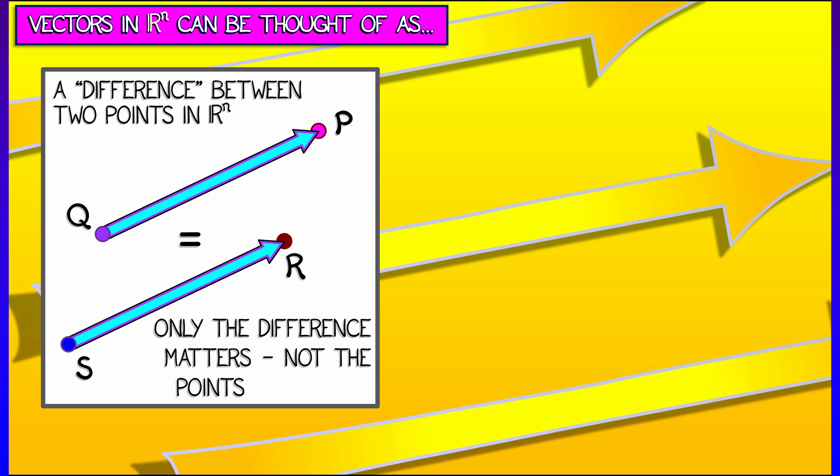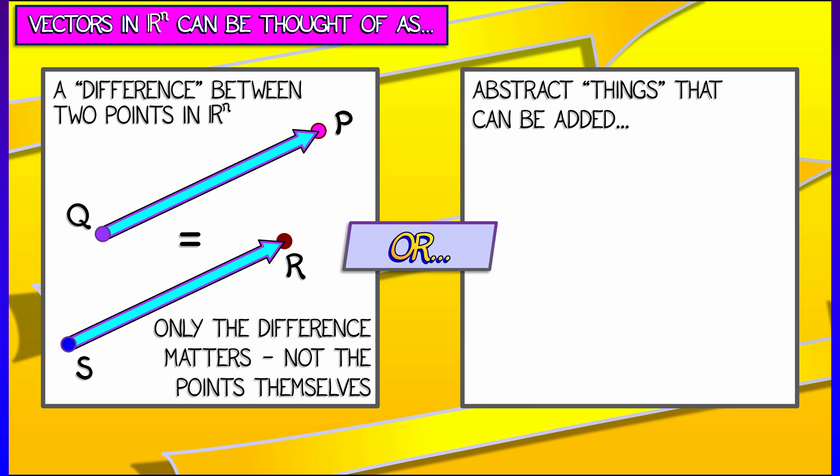or from two different points, because what matters is not the points, but the difference between them. Now, that's only one way to think about vectors.